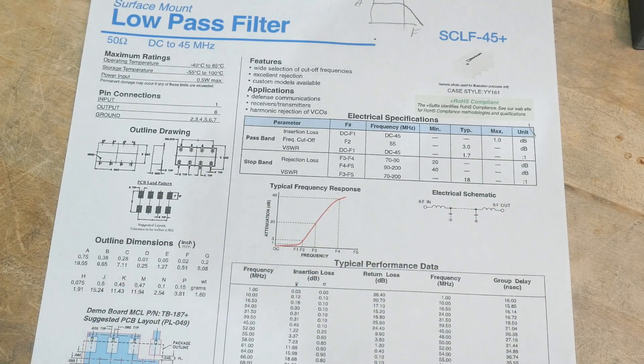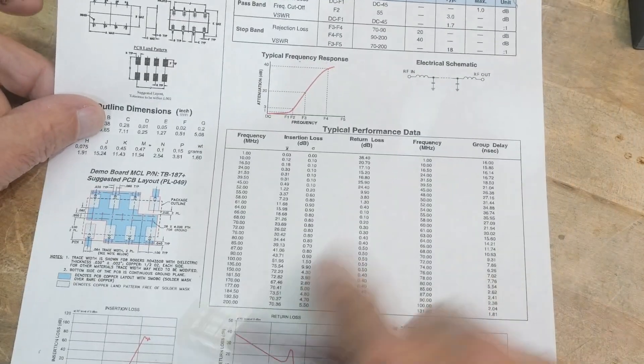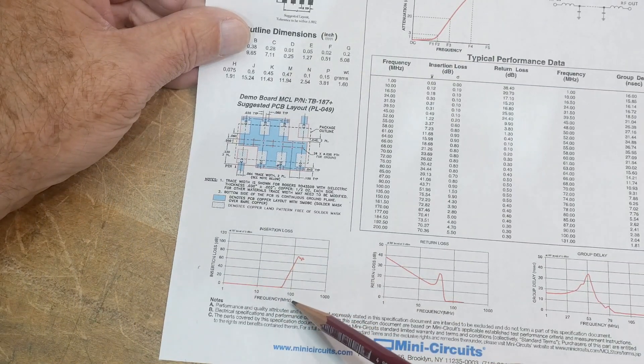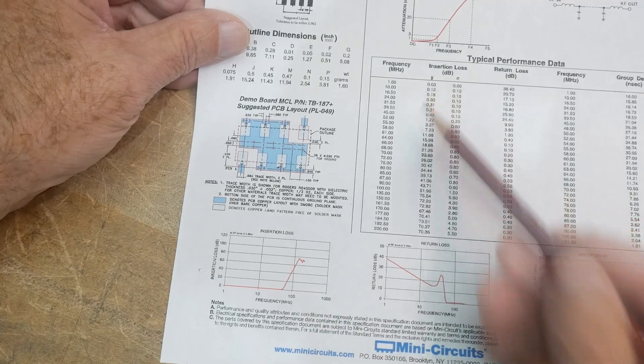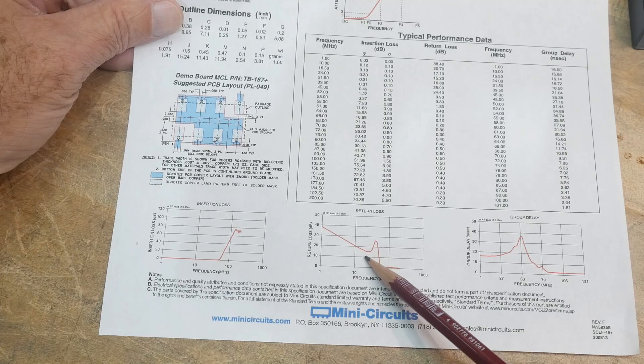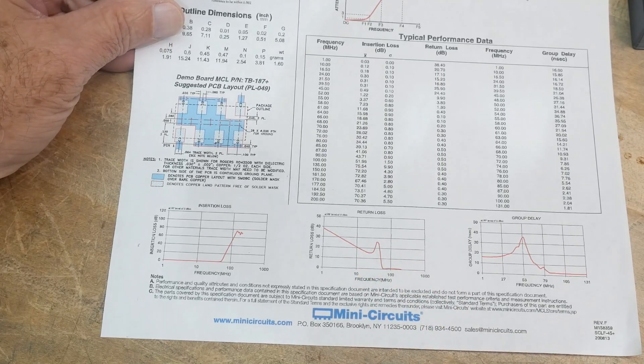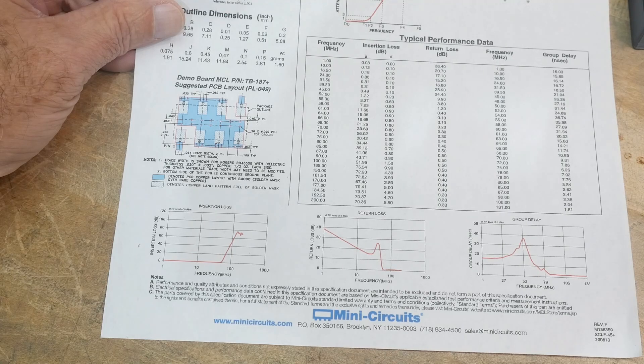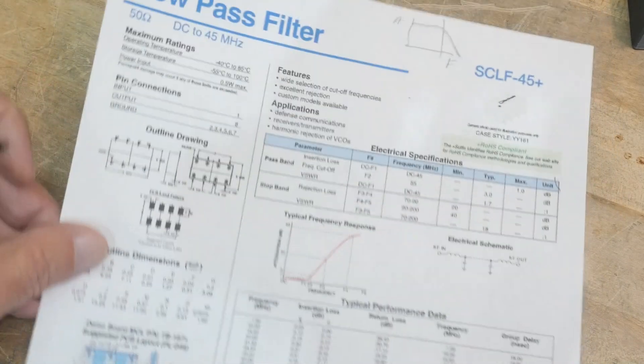So, anyway, there you go. And then they give you a nice chart here, too, if you really care. They also tell you insertion loss versus frequency. Isn't that just the graph that we had? Maybe just a different plot. Here's return loss. Kind of an interesting return loss diagram. And group delay. So, yeah, let's take a look at it.